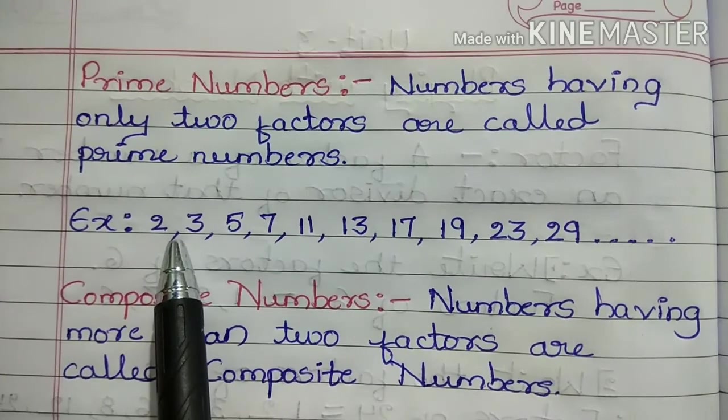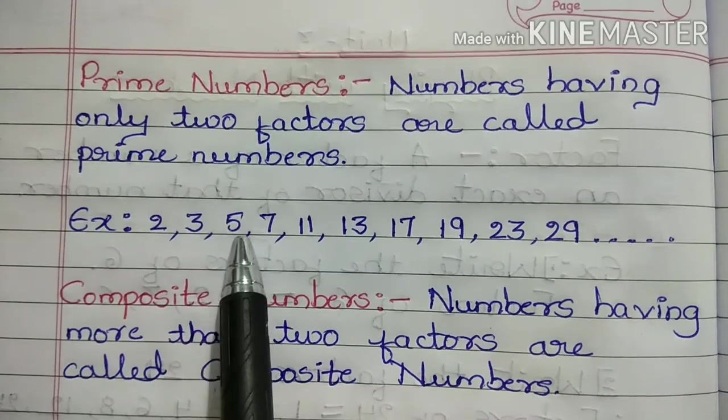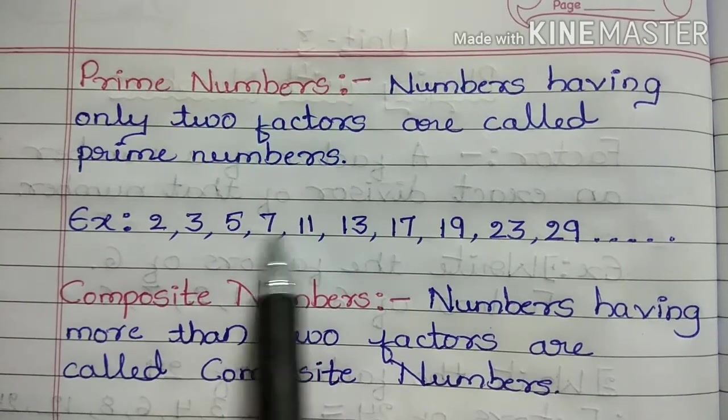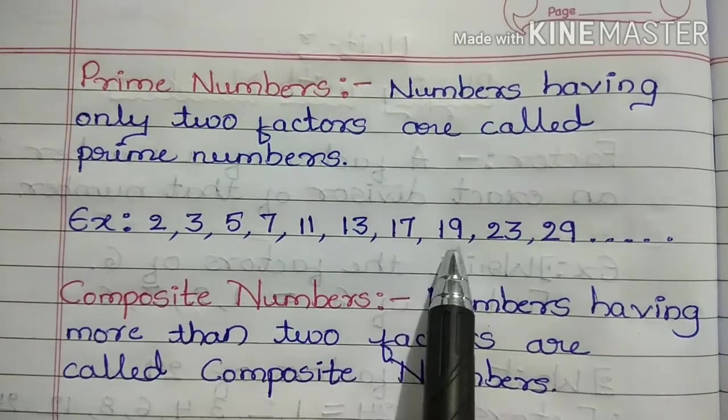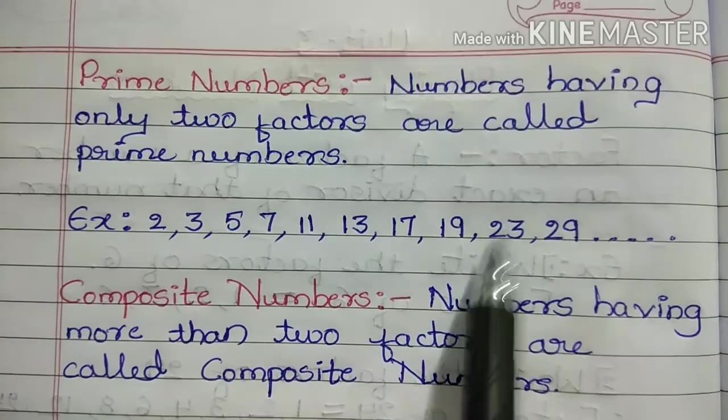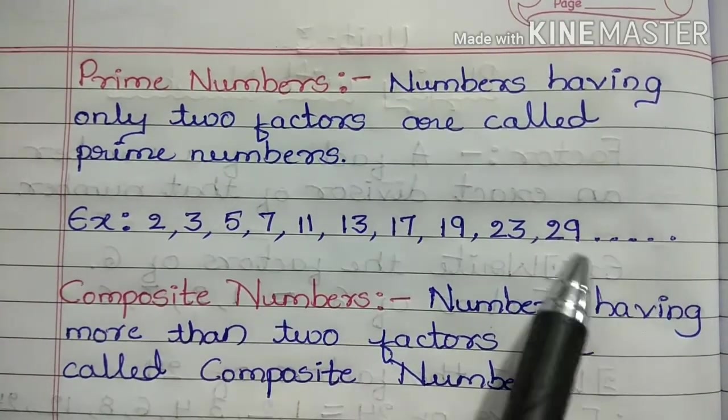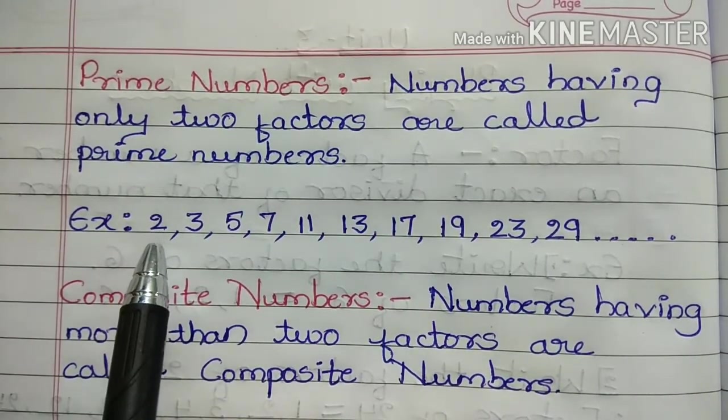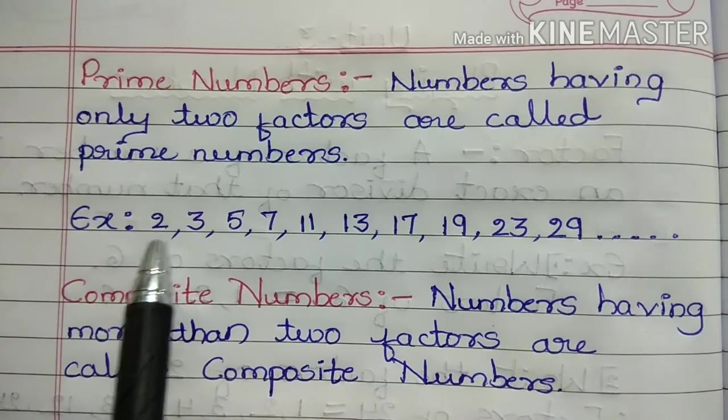2 is having only two factors, that is 1 and 2. 3 is 1 and 3. 5 is 1 and 5. 7 is 1 and 7. 11 is 1 and 11. 13 is 1 and 13. 17 is 1 and 17. 19 is 1 and 19. 23 is 1 and 23. And 29 is 1 and 29. All these numbers have only two factors. In this, 2 is the very smallest prime number. So 2 is called the smallest prime number.